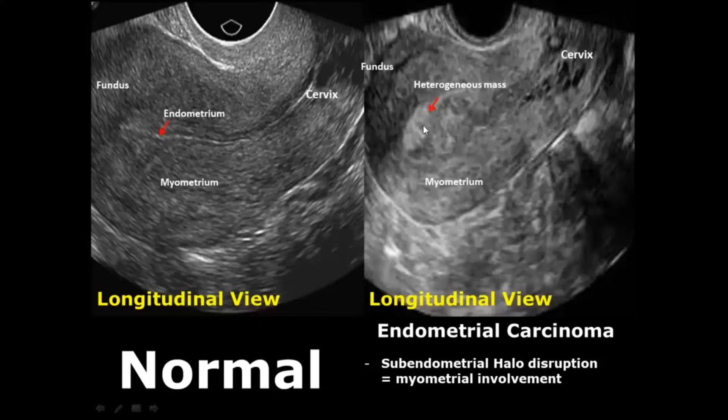In endometrial carcinoma, if there is disruption of this sub-endometrial halo, it leads to myometrial involvement, meaning the carcinoma has reached the myometrium.